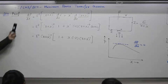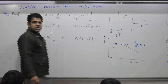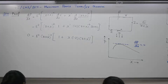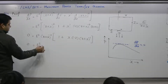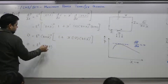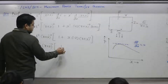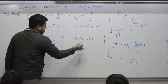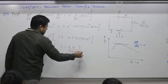What is the condition for maximum power? dP/dX is equal to 0. Setting the expression to 0, what you have in the bracket is 1 minus 2X divided by (R plus X) equals 0.